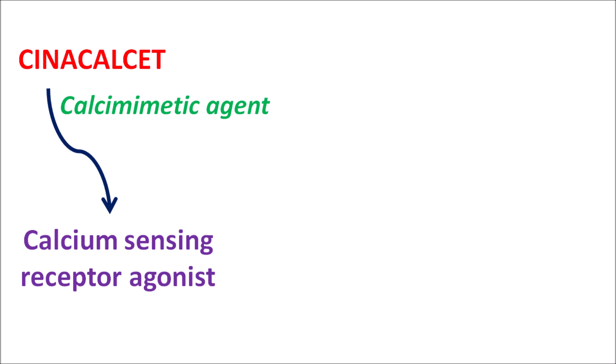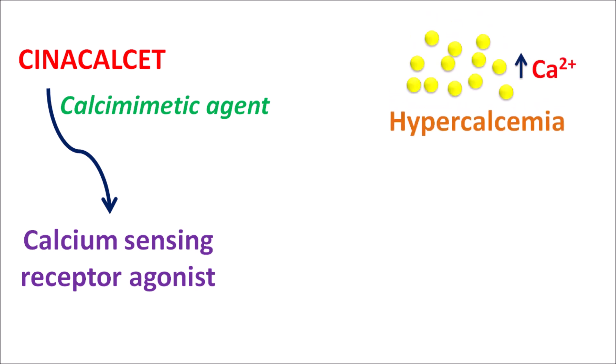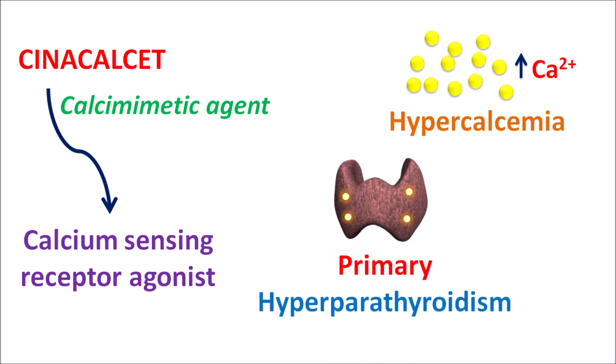Similarly, in some conditions, calcium levels are excessively raised resulting in hypercalcemia. This hypercalcemia may be associated with primary hyperparathyroidism. In such situations, Cinacalcet can be used, but it is not a first-line drug in primary hyperparathyroidism. In patients where surgery to remove the parathyroid gland is not advisable, Cinacalcet can be used to reduce the growth of the parathyroid gland.